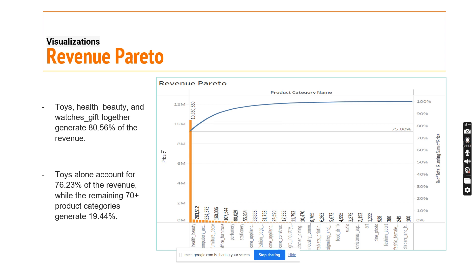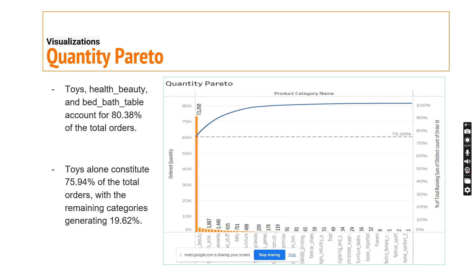Starting with the revenue Pareto: toys, health beauty, and watches gift combined generate greater than 75 percent of our revenue. Toys alone is generating 76 percent. The rest of the 70-plus product categories are generating about 19 percent of the revenue.